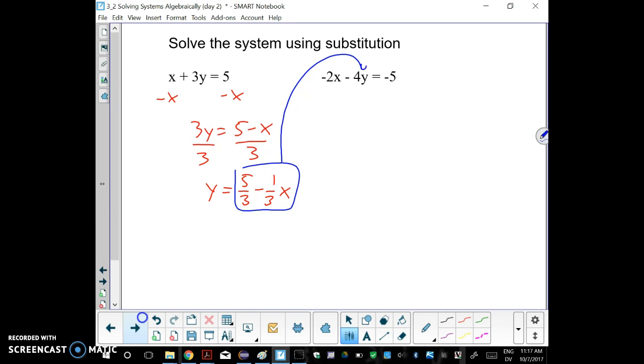The easier thing, and again you can use either equation, but the easier thing is to realize, hey, I could get x alone. It's almost by itself already.